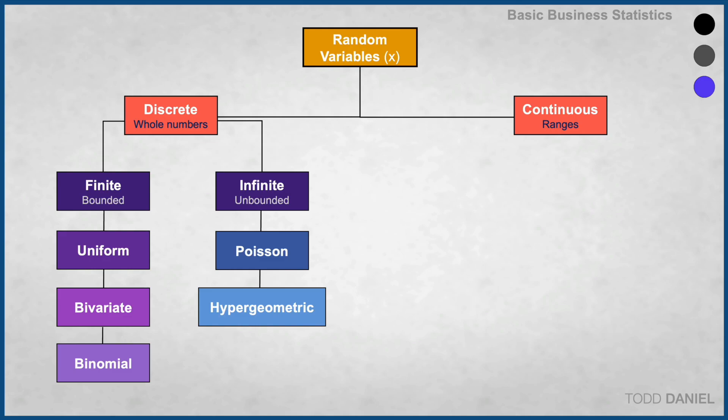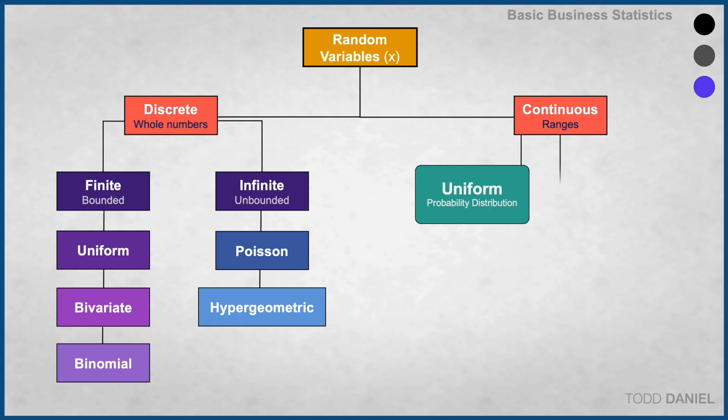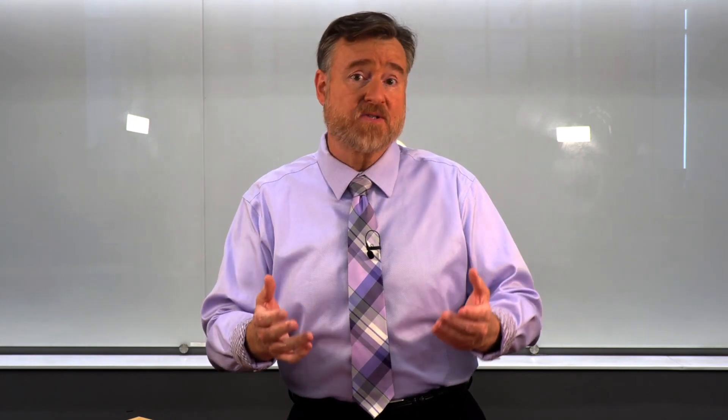Next week, we're going to look at continuous random variables. We will start with a uniform probability distribution, which will be similar to what we've learned about with discrete random variables. Then we will learn about an exponential probability distribution. And finally, the most important distribution in all of statistics, the normal probability distribution.